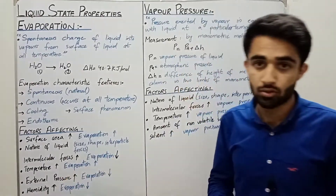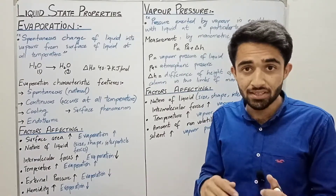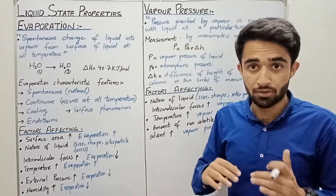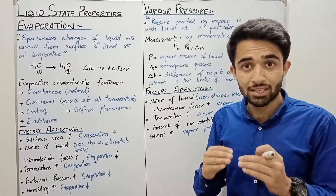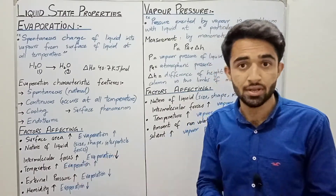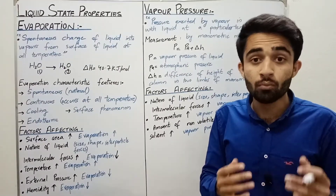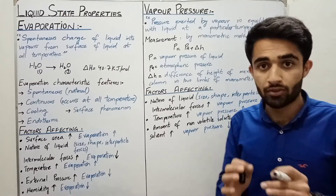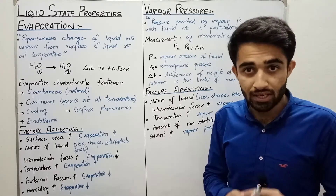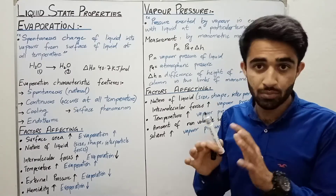If we increase external pressure, evaporation decreases because there is more pressure in the surroundings, so fewer molecules have enough energy to overcome the external pressure. Regarding humidity, if there is more moisture in the air, fewer molecules will evaporate from the surface because there is less space available in the surrounding air.